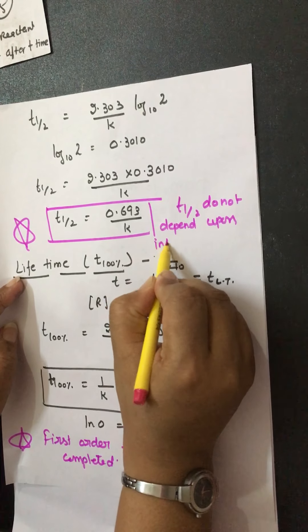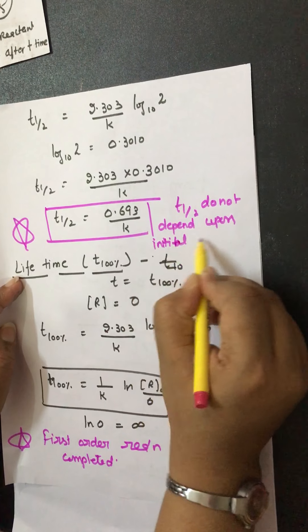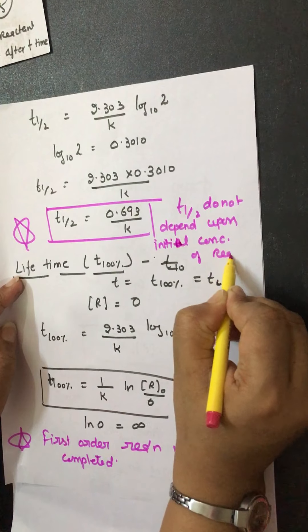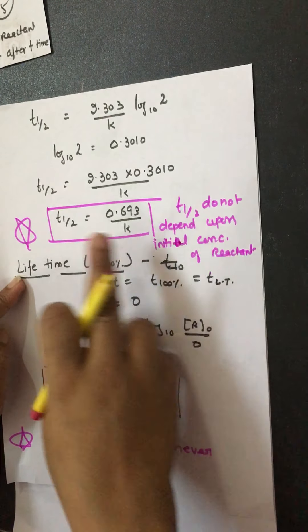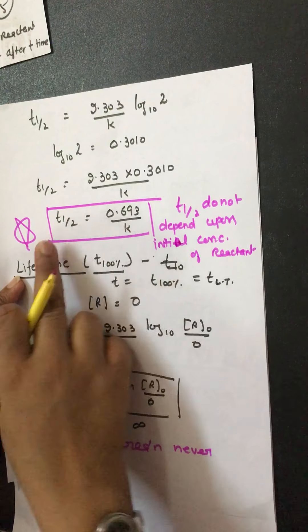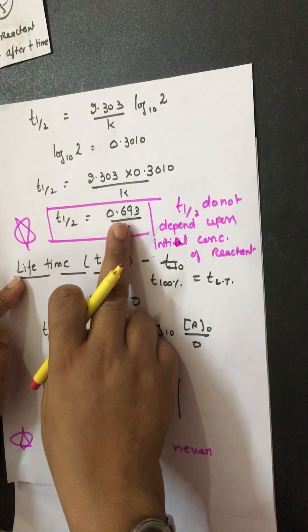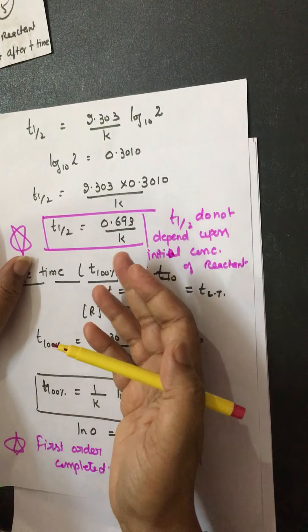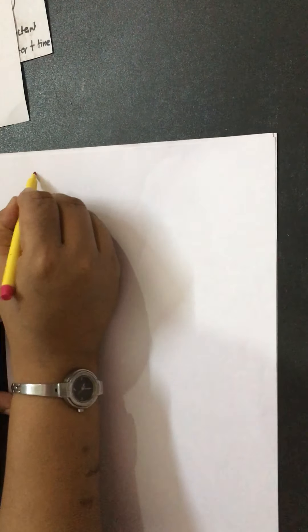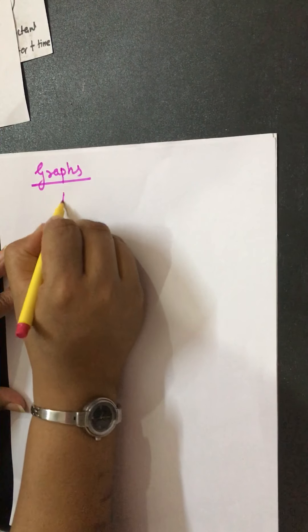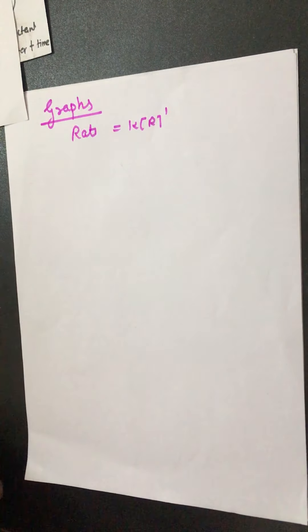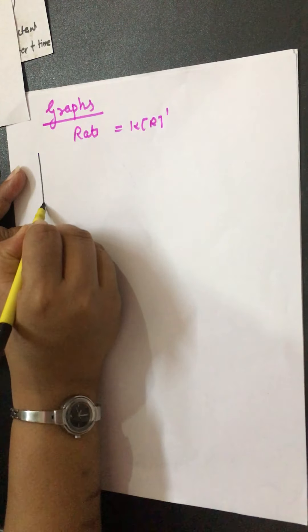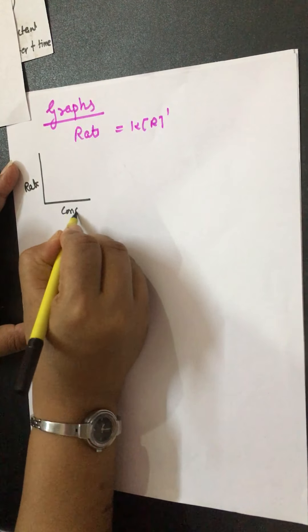Now we discuss graphs for the first order reaction. Since rate equals k·R, the rate depends upon the concentration of reactant, so a graph of rate vs. concentration gives a straight line through the origin. For the integrated rate law, ln R equals minus kT plus ln R₀, this is a y = mx + c type straight line equation. Plotting ln R on the y-axis vs. time on the x-axis gives a straight line with slope = minus k and intercept = ln R₀.